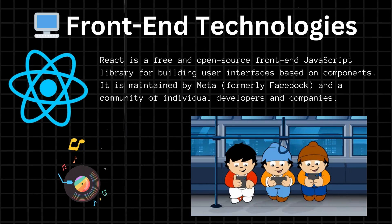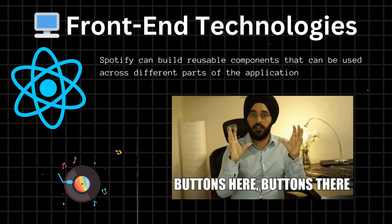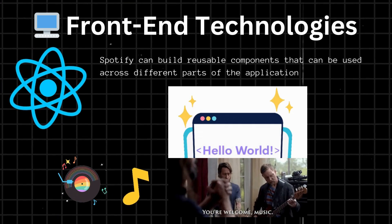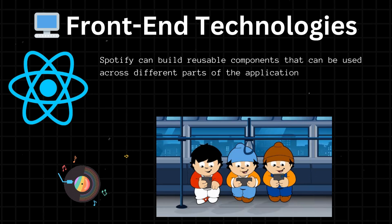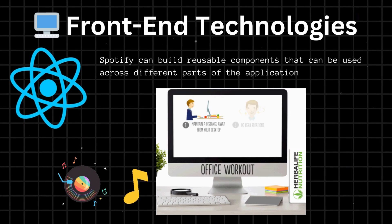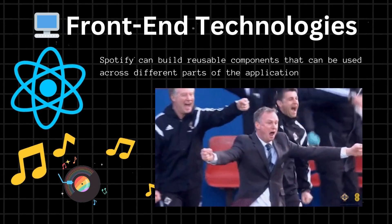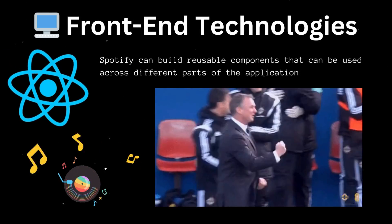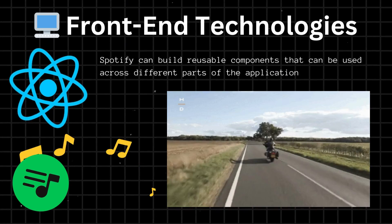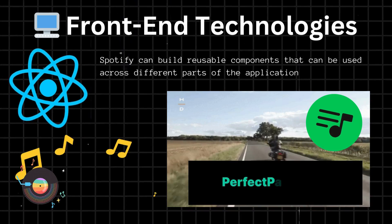React. Spotify uses React for its web and mobile applications because it allows them to create highly responsive and dynamic user interfaces. With React, Spotify can build reusable components that can be used across different parts of the application, making it easier to maintain and add new features. React also allows Spotify to efficiently manage the application state, so the interface can be updated in real time as the user interacts, creating a more engaging and interactive experience.